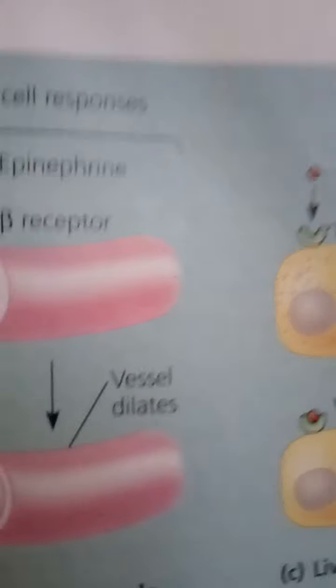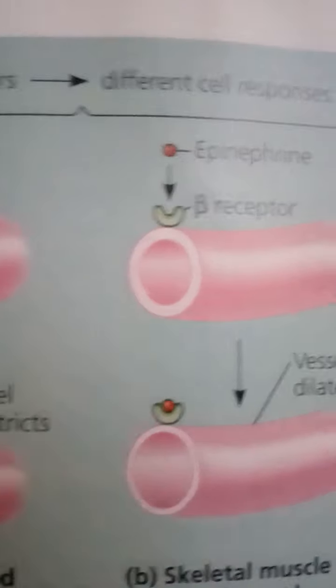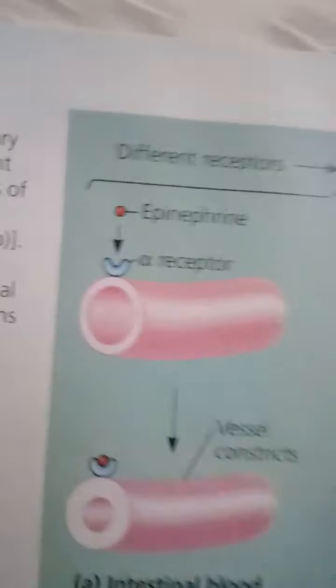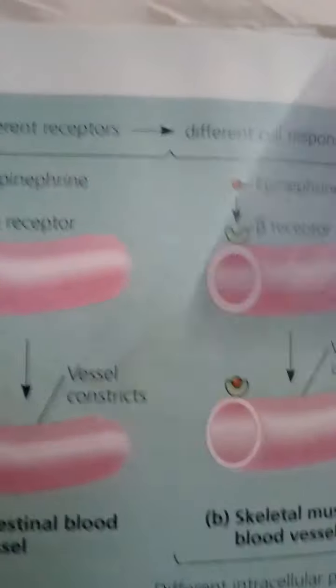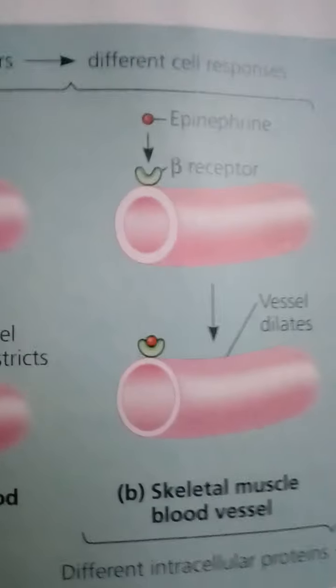Consider the multiple effects of epinephrine in mediating the body's response to short-term stress. Notice this figure: liver cells and the smooth muscle of blood vessels supplying skeletal muscle contain beta-type epinephrine receptors, whereas the smooth muscle of the intestinal blood vessels has alpha-type epinephrine receptors. These tissues respond differently to epinephrine, resulting in decreased blood flow to the digestive tract and increased delivery of glucose to major skeletal muscles, helping the body react quickly in emergencies.